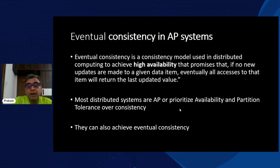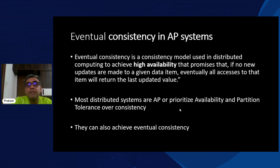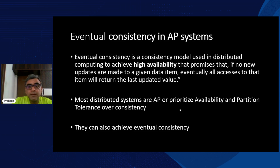Eventual consistency duration can be configured based on many factors. It's not like the system is inconsistent forever — eventually it will be consistent. AP systems provide availability and partition tolerance, and if not strong point-in-time consistency, they do provide eventual consistency. Over a period of time, they catch up. For most scenarios, this is acceptable, which is why most systems today favor AP.